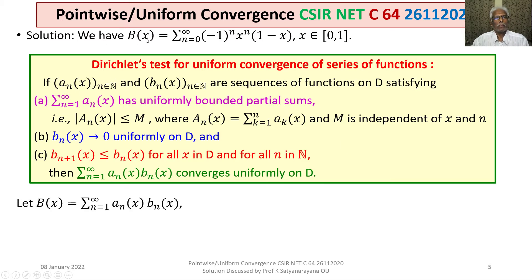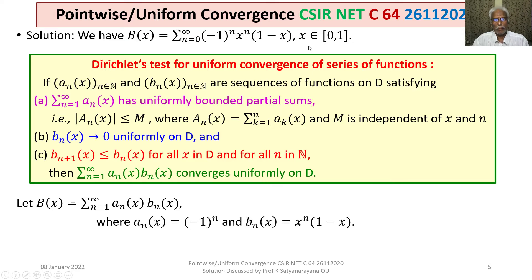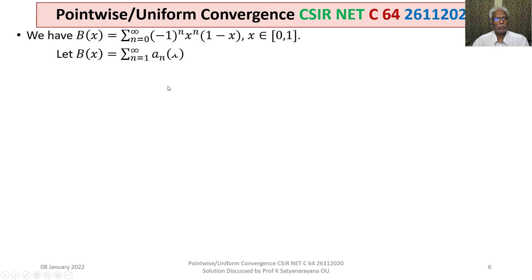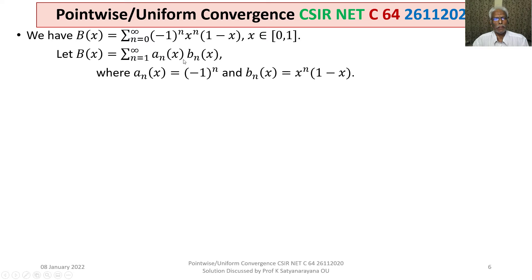For our series B(x), we write it as sigma a_n(x) · b_n(x) where a_n(x) = (−1)^n and b_n(x) = x^n · (1−x), with x belonging to [0, 1].